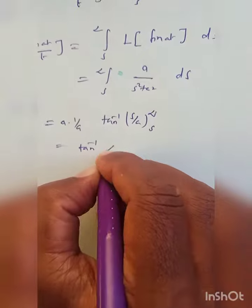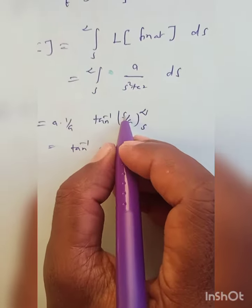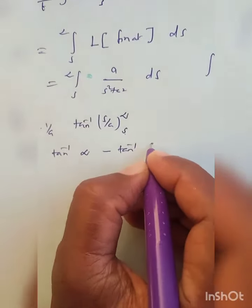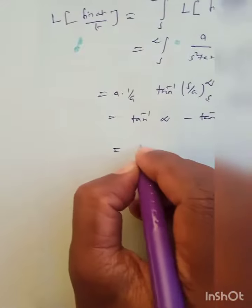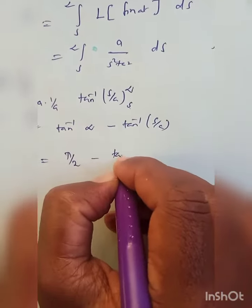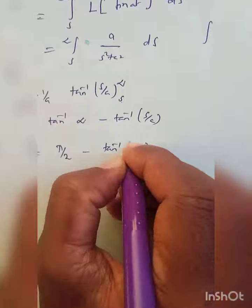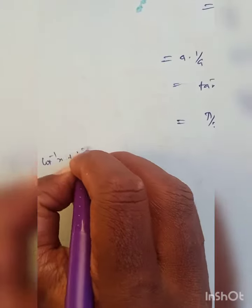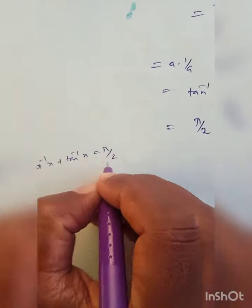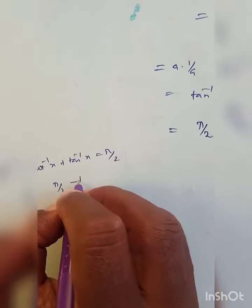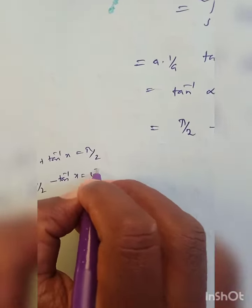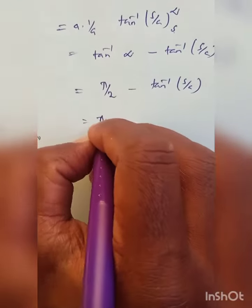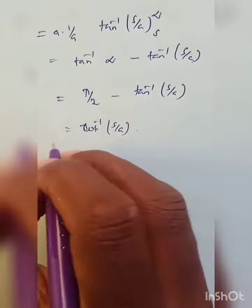Applying the limits: tan⁻¹(infinity) minus tan⁻¹(s/a). We know the formula cot⁻¹(x) + tan⁻¹(x) = π/2, therefore π/2 minus tan⁻¹(x) equals cot⁻¹(x). Instead of x we have s/a, so we write cot⁻¹(s/a). Therefore, Laplace transform of sin(at)/t equals cot⁻¹(s/a).